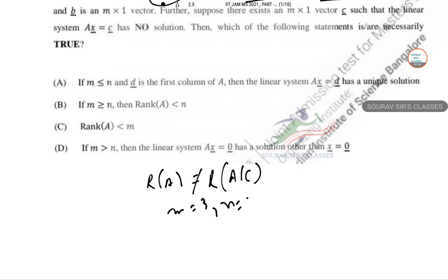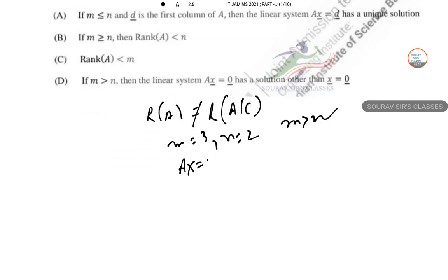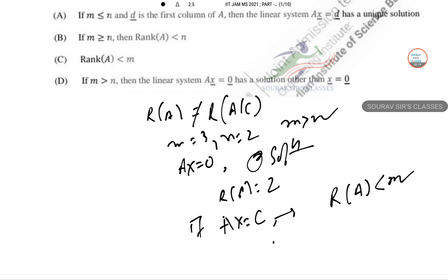AX equal to 0 has only zero solution because the rank of A equals 2, which equals the number of unknowns. If AX equals C has no solution, then rank of A is less than M.